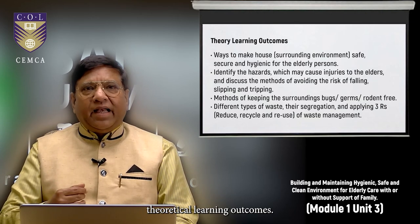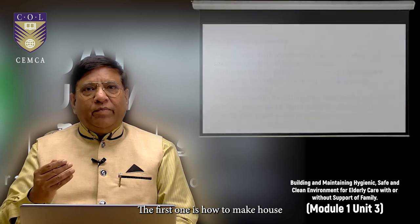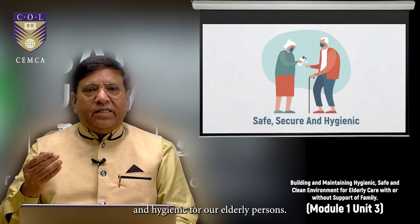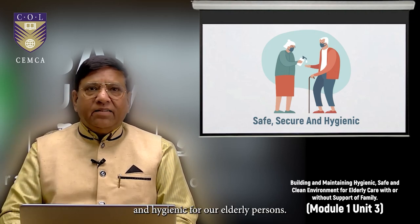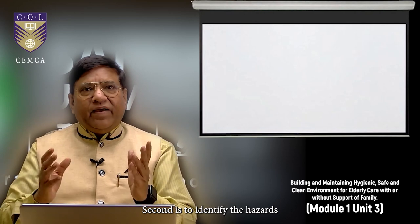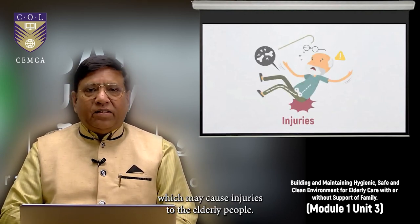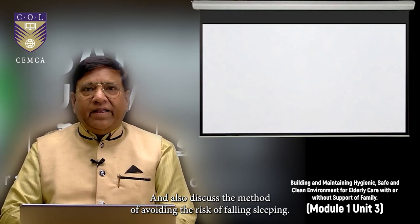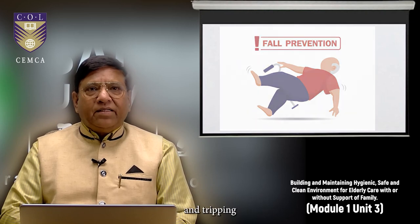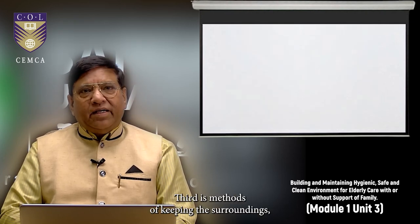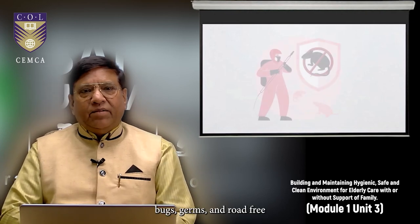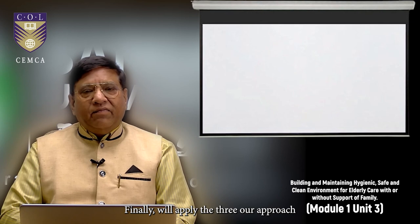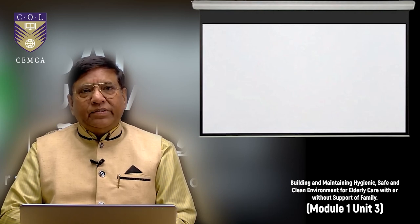There are 4 theoretical learning outcomes. The first one is how to make house and surrounding environment safe, secure and hygienic for our elderly persons. Second is to identify the hazards which may cause injuries to the elderly people and also discuss the methods of avoiding the risk of falling, slipping and tripping. Third is methods of keeping the surroundings bug, germ and rodent free. Finally we will apply the 3R approach, reduce, recycle and reuse, to proper waste management.